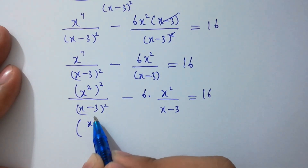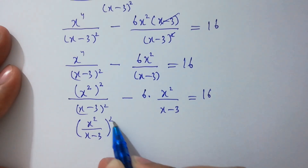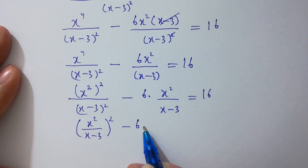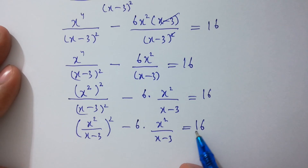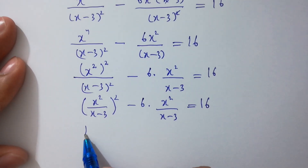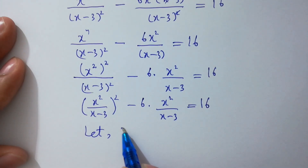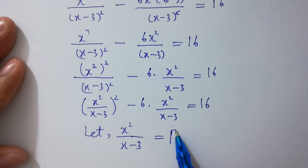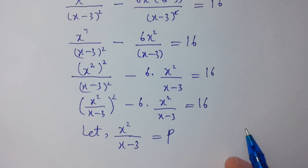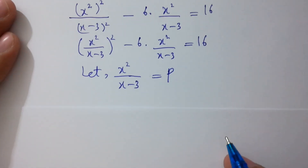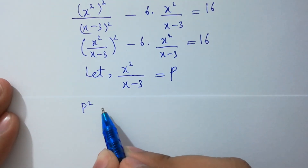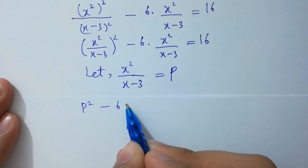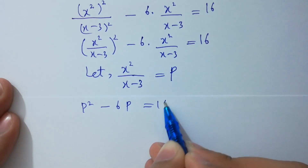We can write this as [x² / (x-3)]² minus 6 times [x² / (x-3)] equals 16. Let x² over (x-3) equal p. So the equation becomes p² minus 6p equals 16. Got it?